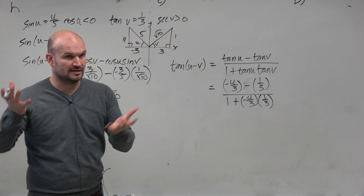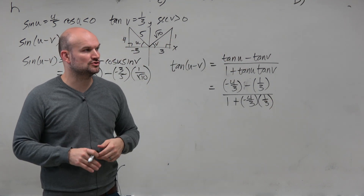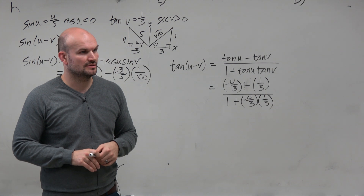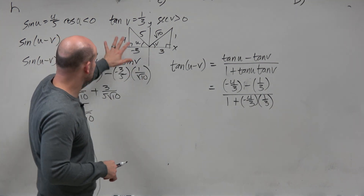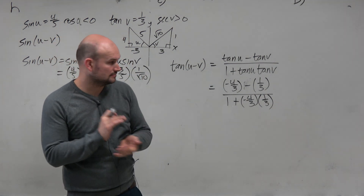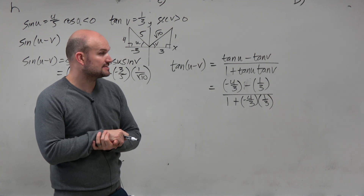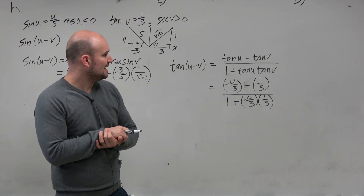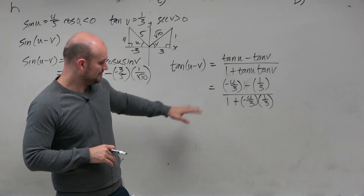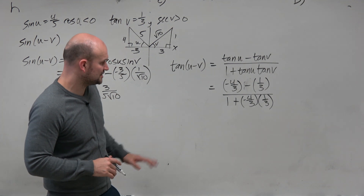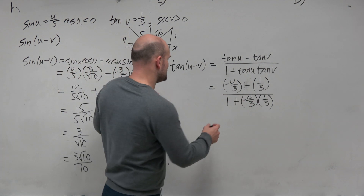So I took my formula and just plugged in the information based on the two triangles I had to create from my original information. Now let's simplify it. I could find the LCD here, but I think for a lot of students it becomes a little bit easier to simplify a little bit at first.